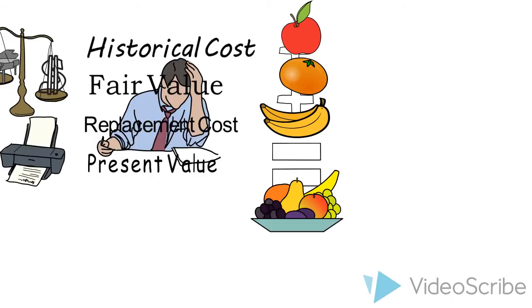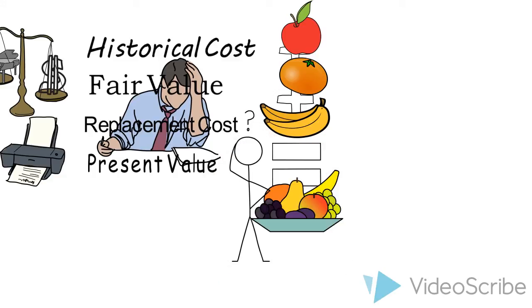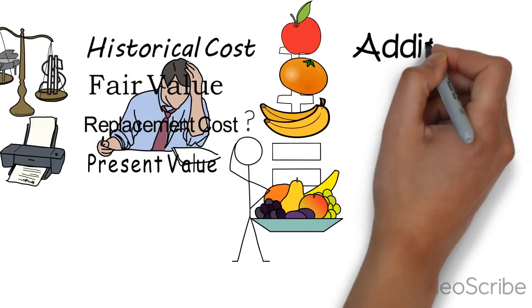The sum of historical cost, net present value, current replacement cost is neither what we paid for the assets, what it would cost to replace the assets, nor what we would receive if we sold the assets. This is known as the additivity problem.